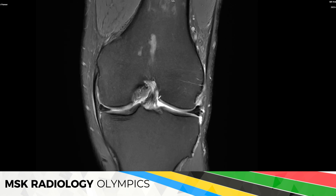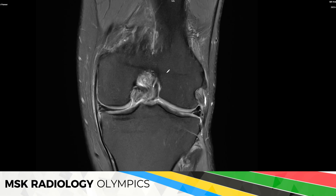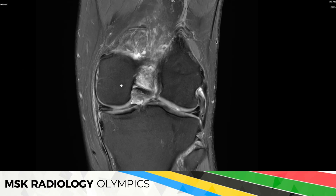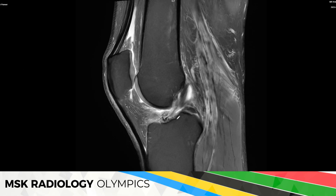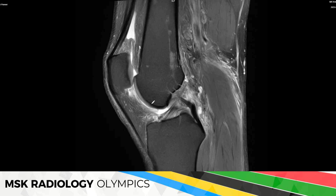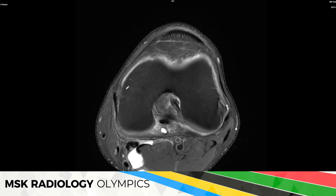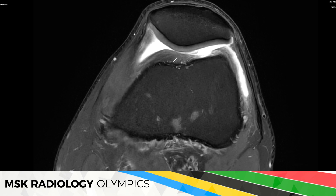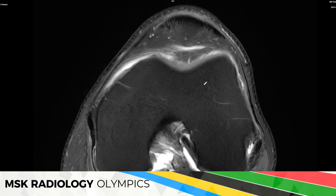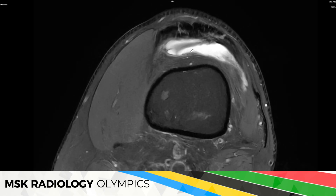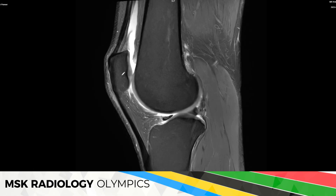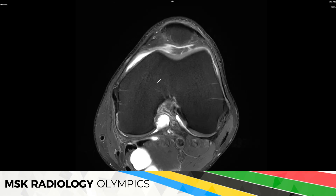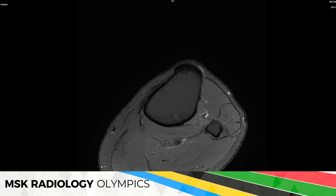Moving centrally: the ACL is continuous, we don't see any major pathology, it is certainly not torn. Given the patient's age and no history of trauma, I wouldn't call an injury here. The PCL is also fine. In the patellofemoral compartment, there is a little bit of edema in the cartilage and some very superficial fraying, but the patellar cartilage is otherwise okay. The trochlear cartilage is fine. There's a tiny bit of fluid in the suprapatellar recess. Extensor tendons are okay and the fat pad looks unremarkable.